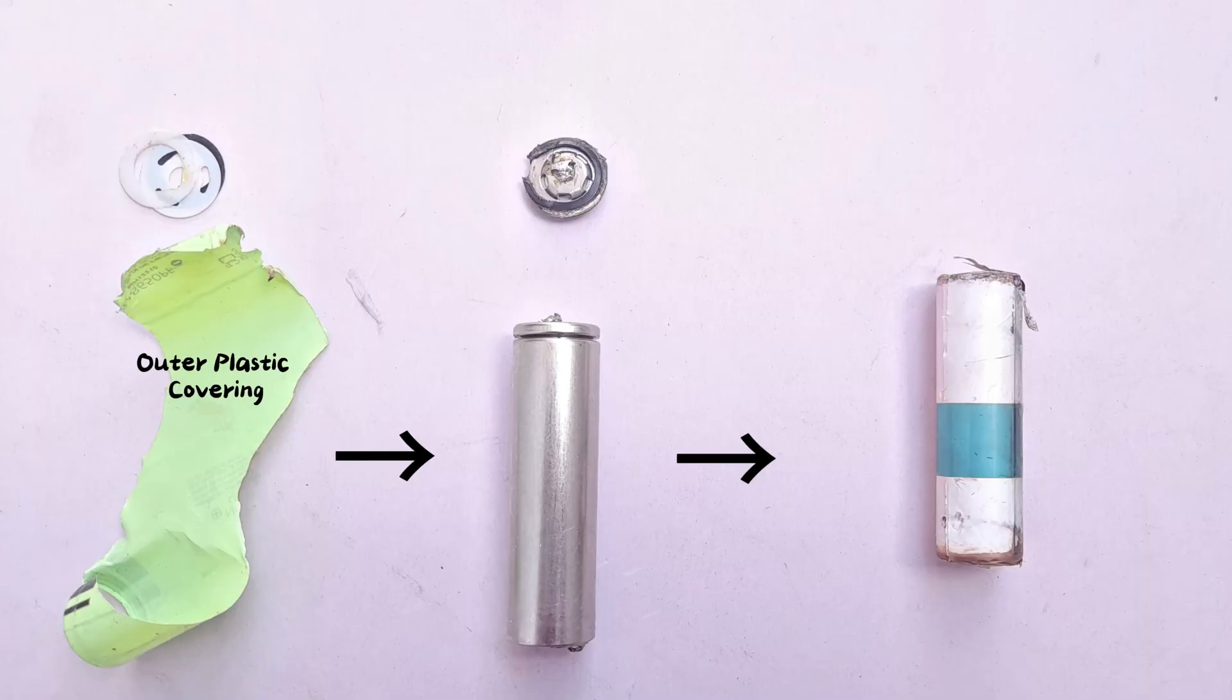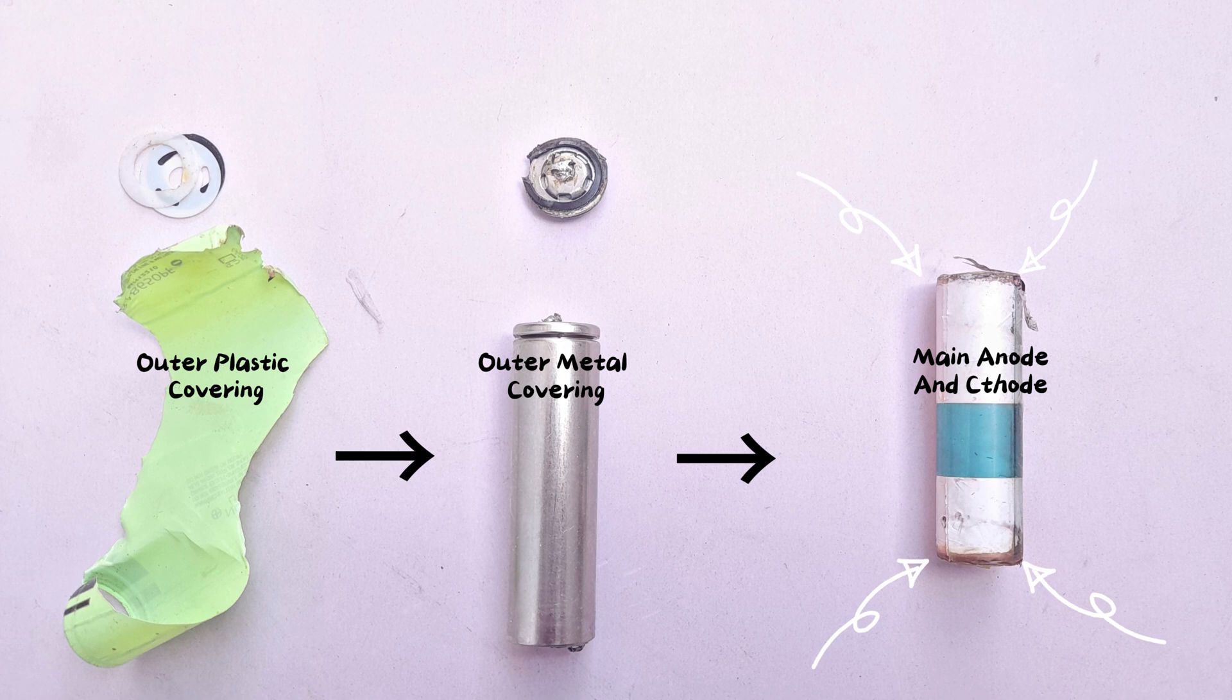We basically need the anode and cathode from this battery. So we had to remove the outer plastic cover and metal casing.